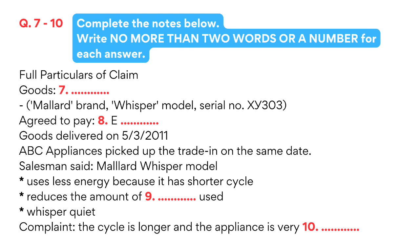You'll need to give a full description of the goods involved, the nature of the defect or fault, and any other relevant particulars. So, tell me, what did you buy? I bought a washing machine. Yes, but what brand, model, and serial number? The brand name was Mallard, and it was the Whisper model. Serial number — just a moment, I've got the warranty papers in my bag. Yes, here it is. Serial number XY303.